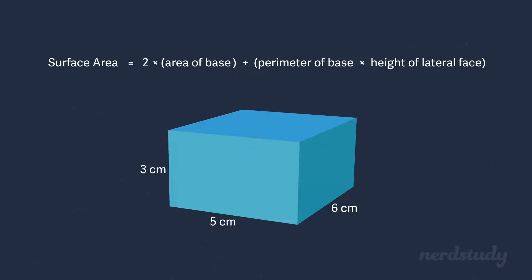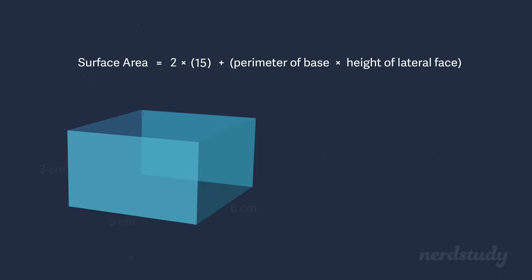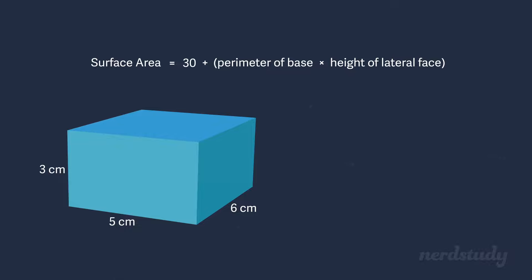To find the area of the base, we simply do length times width for the rectangular base. So we do 3 times 5, which equals 15 centimeters squared. And since we've got two of these areas on the prism, we multiply it by 2, giving us 30 centimeters squared so far. Good.